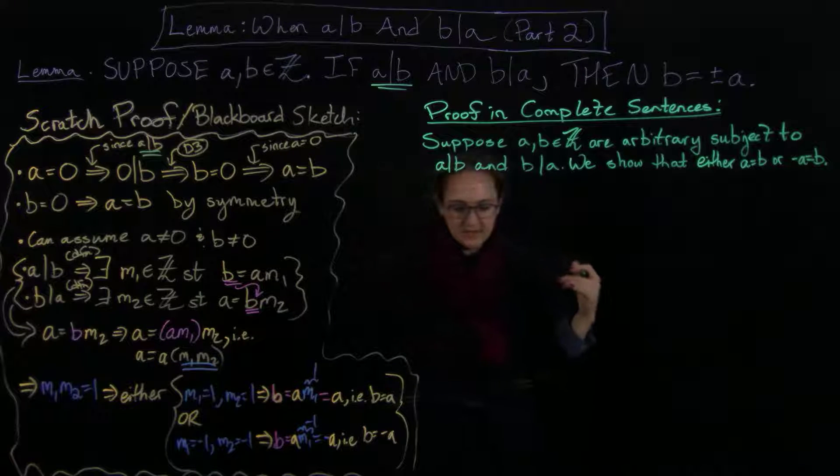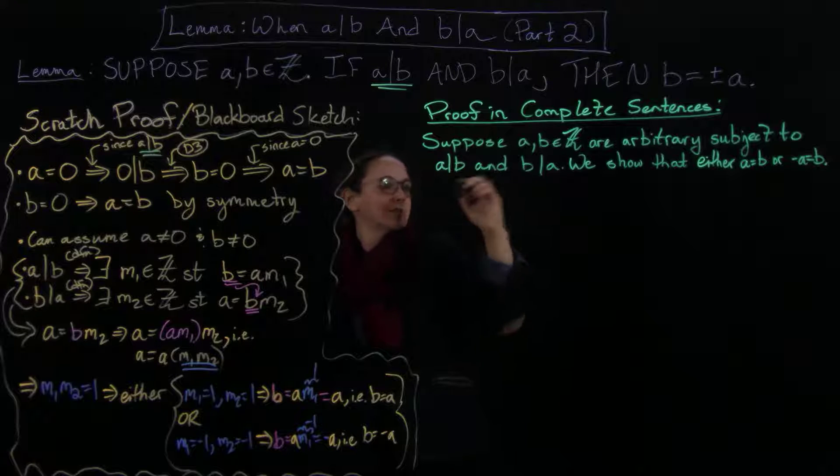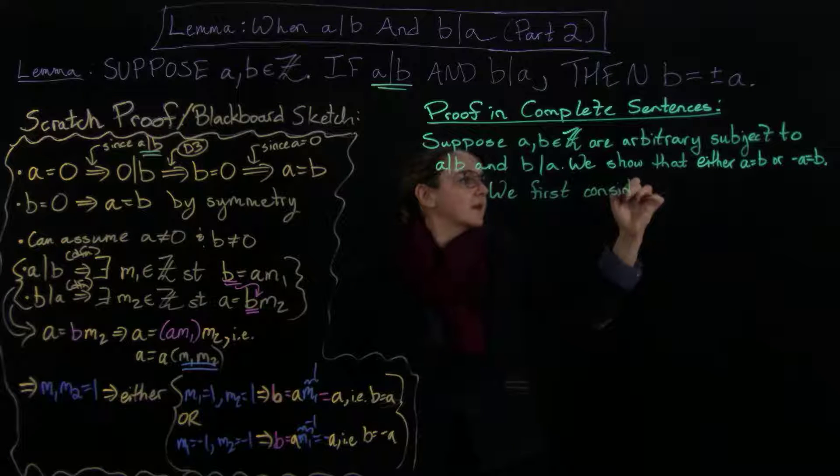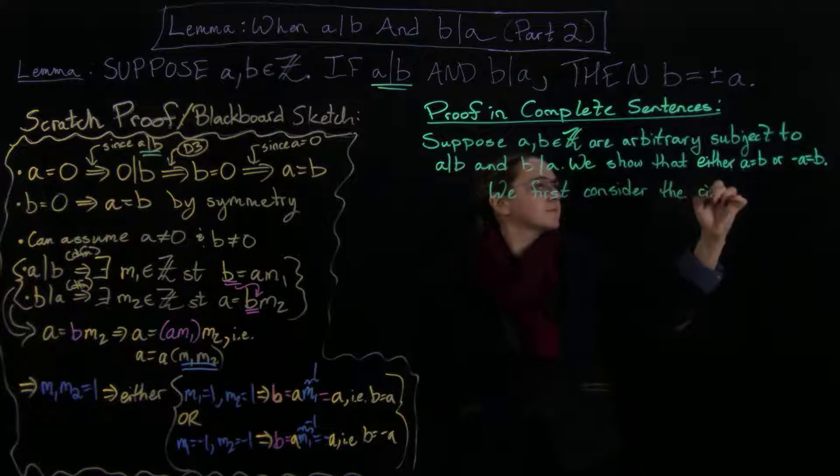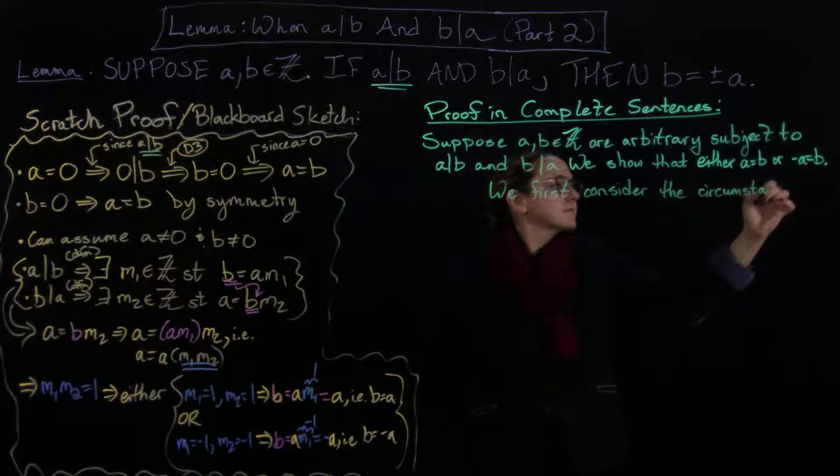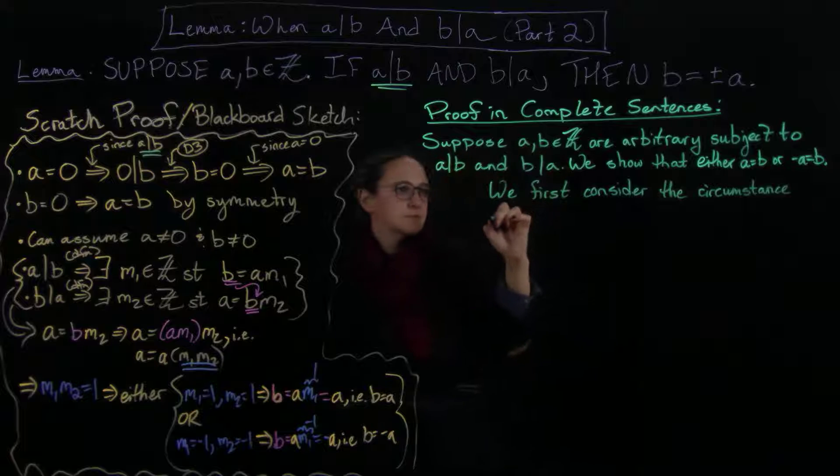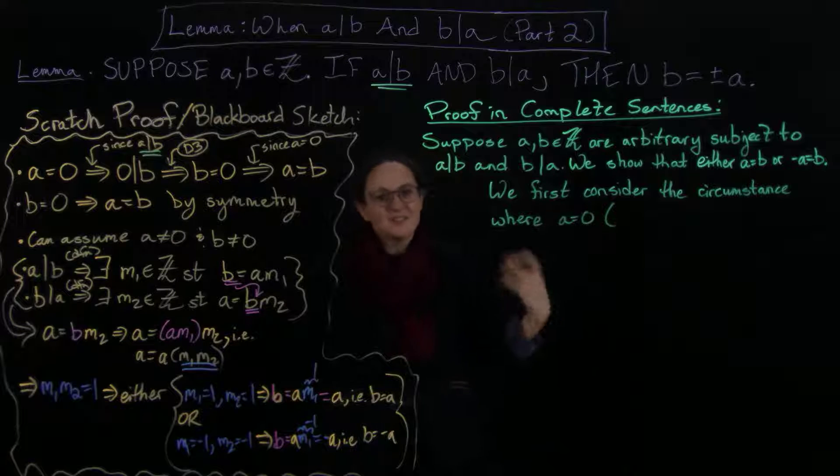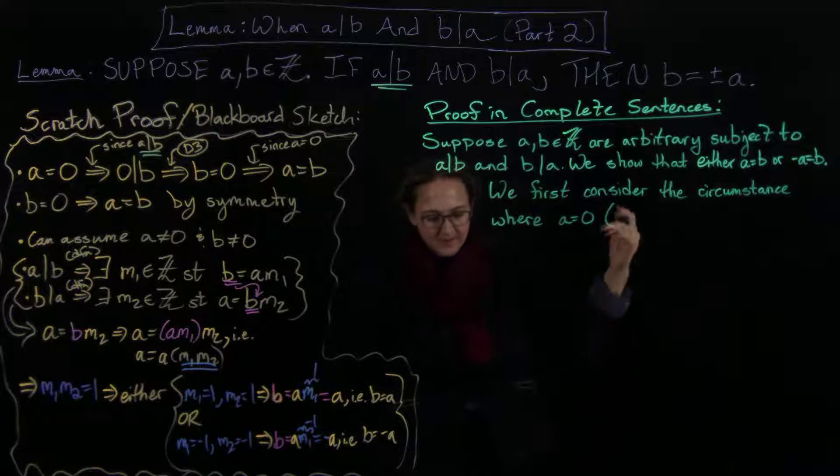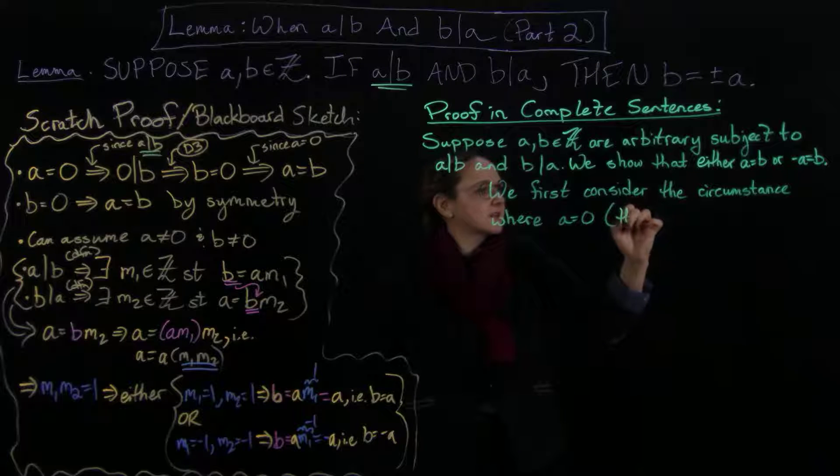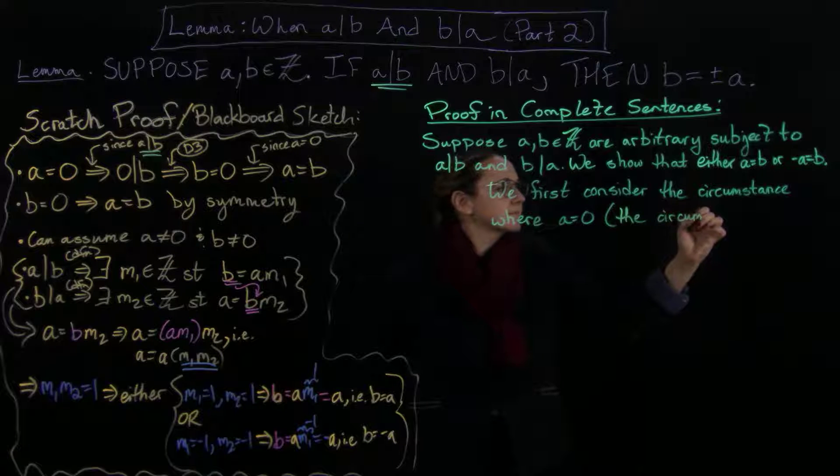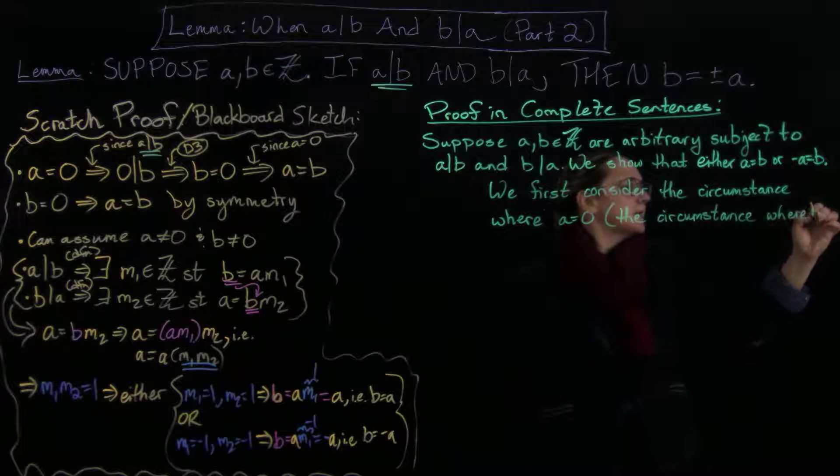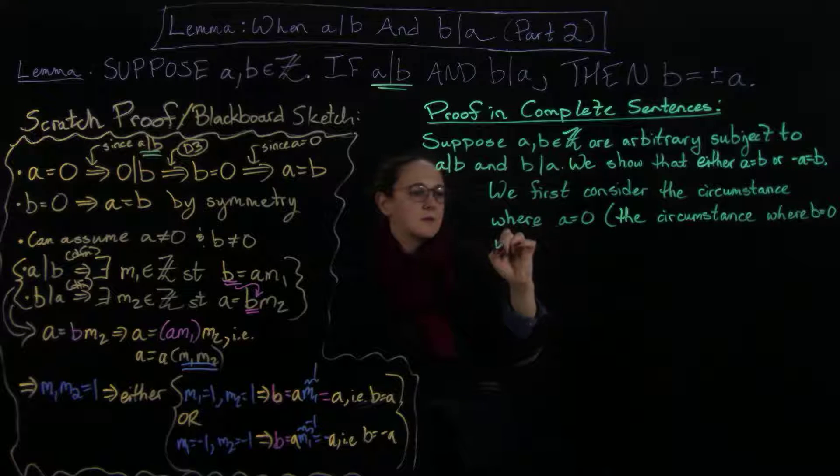So let's go ahead and do this. So we first consider the circumstance where a equals zero, and the circumstance where b equals zero will then follow by symmetry.